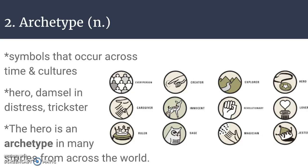Our second word is archetype, which is a noun. The definition for archetype is the original pattern or model from which all things of the same kind are copied or on which they are based — a model or first form. It's also kind of like a prototype. Archetypes are symbols that occur across time and cultures. A hero is an archetype, because you can see figures like a hero, a damsel in distress, or a trickster across stories in all different cultures from across the world.